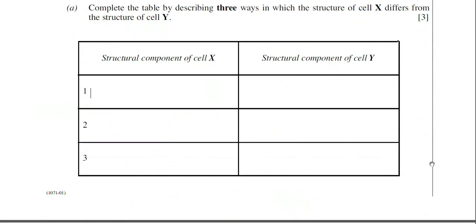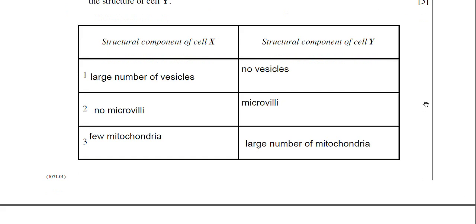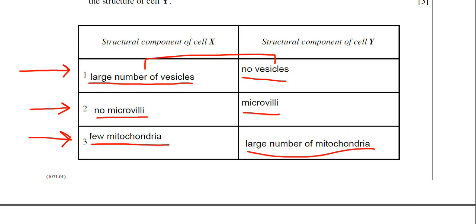So I shall type some answers in and then you can see what I mean about making a direct comparison there. So I've put in my differences and as you can see, and this is what the examiner will want: I've put large number of vesicles for cell X, and then I've made the direct comparison then to cell Y: no vesicles. I've done the same then for no villi for cell X, and there are microvilli in cell Y. There's few mitochondria in cell X, and then there's a large number of mitochondria in cell Y. So make sure you put the direct comparisons like that, otherwise you won't get the mark. The reason why is that there's only three marks for this question. So it must mean there's a mark per row because there's three rows.